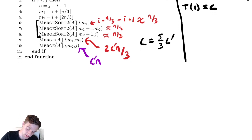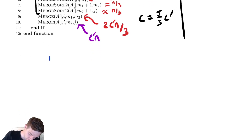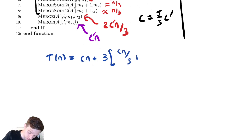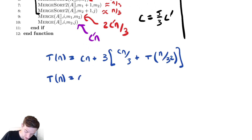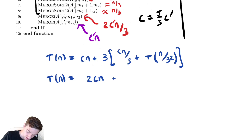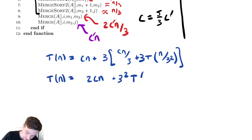So let's march forward with some substitutions. T of n is equal to cn plus three times t of n over three, where t of n over three contributes cn over three, yielding n over three squared. Let's distribute the three and we get cn plus cn — grouping those together as two cn — plus three squared times t of n over three squared. Let's do another substitution.